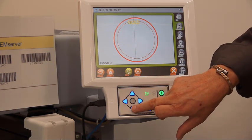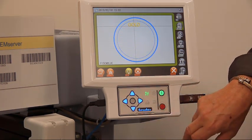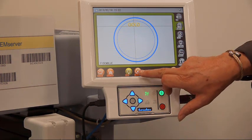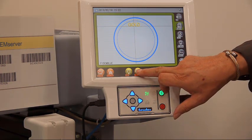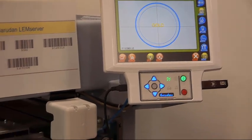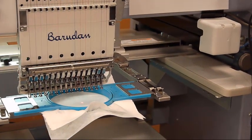I can either manually move it back, or a quicker way is I just press and hold the centering button. That moves the design exactly into the middle of the hoop.